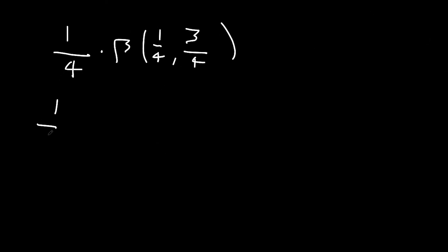So this gives us gamma a quarter, gamma three quarters over gamma of a quarter plus three quarters, which is gamma of one. And gamma of one is just one, so we can leave it like this.